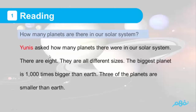Eunice asked how many planets there were in our solar system. There are 8. They're all different sizes. The biggest planet is 1000 times bigger than ours.